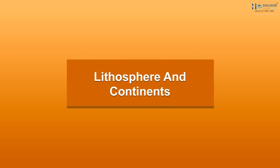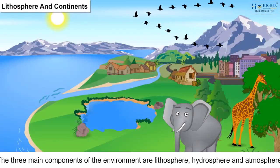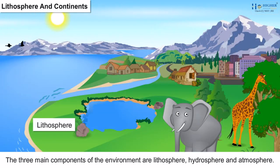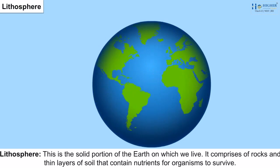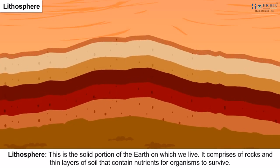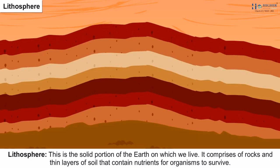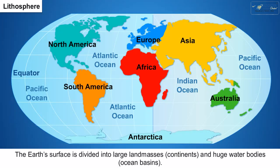Lithosphere and Continents. The Earth is the only planet which has land, water and air that are essential for life. The three main components of the environment are lithosphere, hydrosphere and atmosphere. The lithosphere is the solid portion of the Earth on which we live. It comprises rocks and thin layers of soil that contain nutrients for organisms to survive. The Earth's surface is divided into large land masses or continents and huge water bodies called ocean basins.